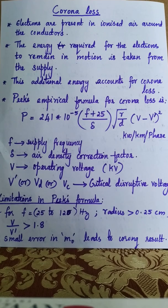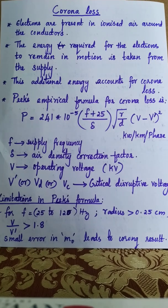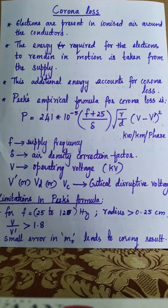Scientist Peek conducted experiments based on the factors responsible for corona loss and arrived at an empirical formula: P = 241 × 10⁻⁵ × (f + 25) / δ × √(r/D) × (V − V')² kilowatt per kilometer per phase. This is not a derived formula but an empirical formula resulting from experimental results.